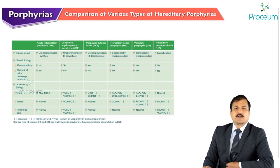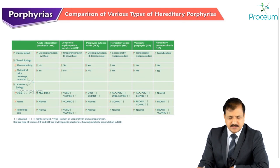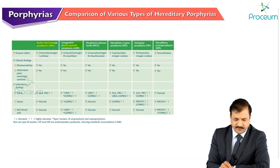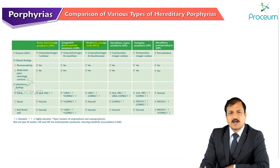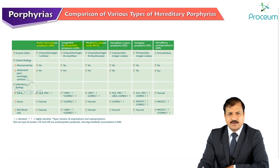A summary table presents different features of all types of porphyria. It covers acute intermittent porphyria, congenital erythropoietic porphyria, porphyria cutanea tarda, as well as hereditary coproporphyria, variegate porphyria, and erythropoietic protoporphyria in tabular form.